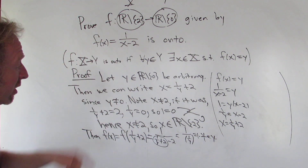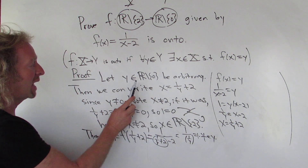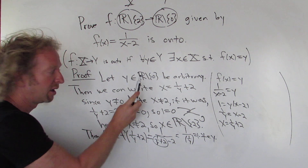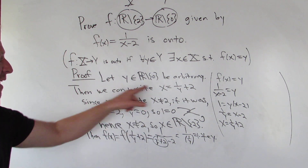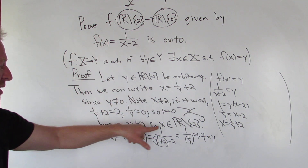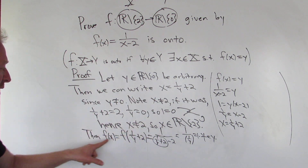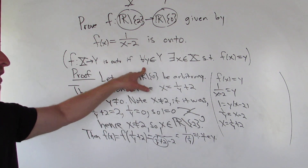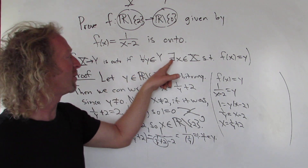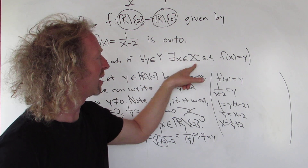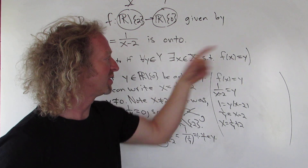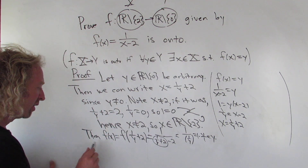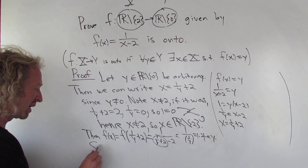So we took any little y in this set, found an x, showed it was in capital X, and then showed f of x is equal to y. Therefore for all little y in capital Y there exists a little x in capital X such that f of x equals y.